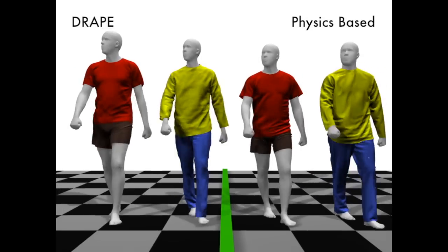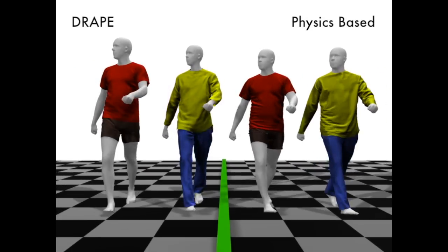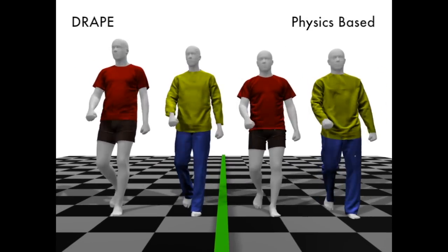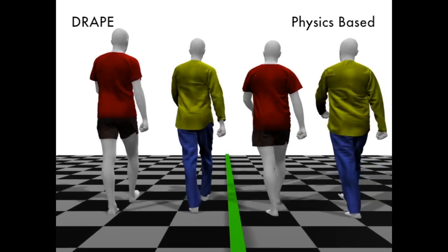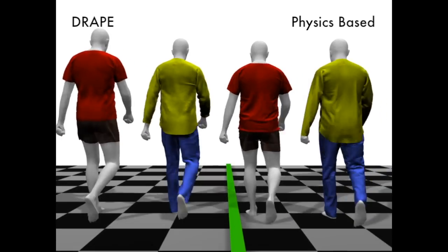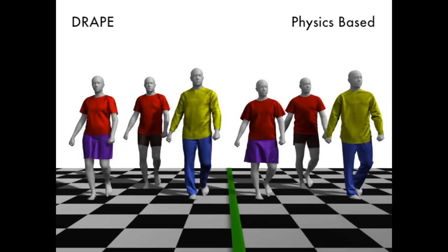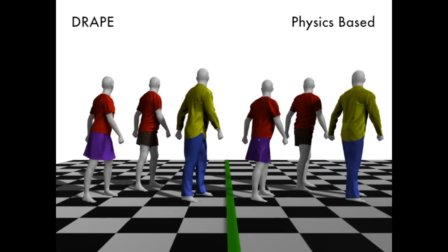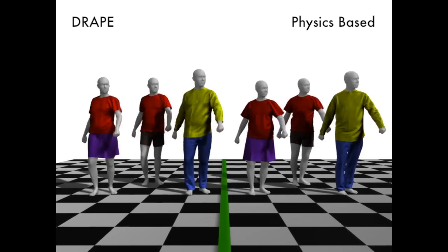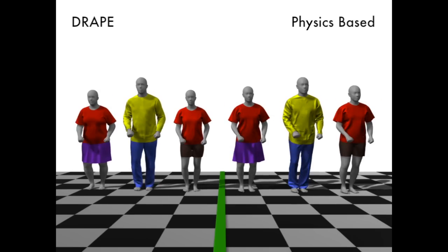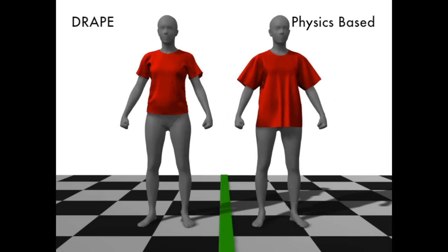Here we compare drape with a physics-based simulation system. Drape generalizes to different body shapes, while physics-based simulation cannot. The importance of this is that changing the body shape does not require redesigning the clothing, so once a wardrobe is modeled by drape, there is no human cost to dressing a new body shape.